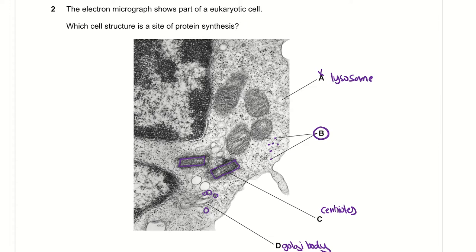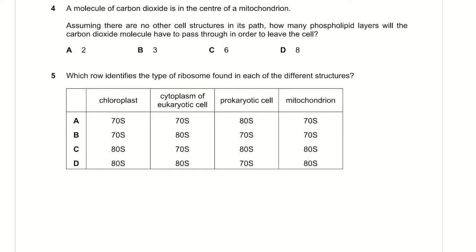Option D could also be the smooth endoplasmic reticulum, but it's not really visible. It cannot be the rough endoplasmic reticulum because it does not have a granular appearance. Therefore, B is the correct answer.